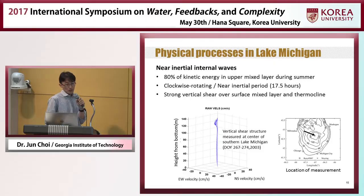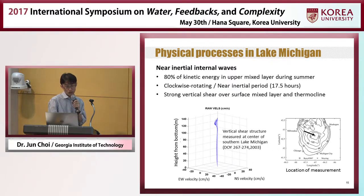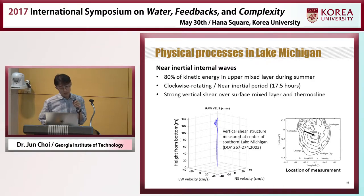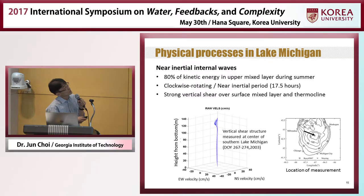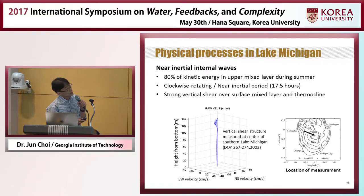Let's talk about physical processes in Lake Michigan and the Gulf of Mexico—specifically the important ones related to dispersion statistics. One key process in Lake Michigan occurs in summertime at the center of the lake. Measurements show near-inertial internal waves that rotate clockwise with a near-inertial period of 17.5 hours. They have strong shear near the surface and the thermocline. This measurement was made at the center of the Southern Basin.